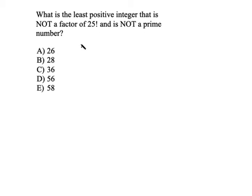What is the least positive integer that is not a factor of 25 factorial and is not a prime number? Well, first things first, none of these numbers are prime, right? So this last little bit right here, we can just disregard completely because none of them are prime numbers.